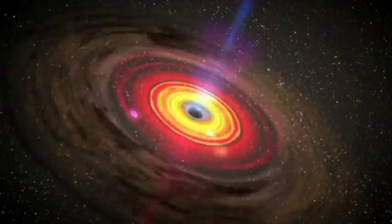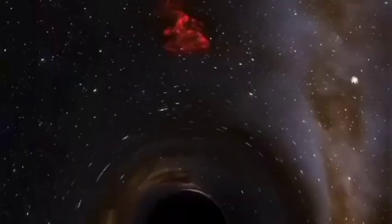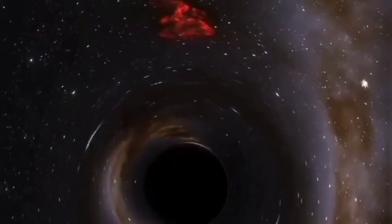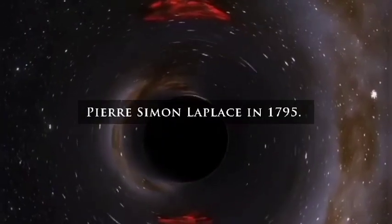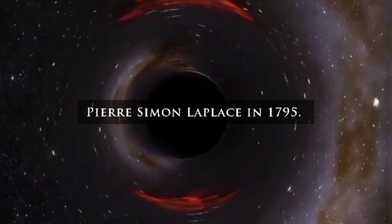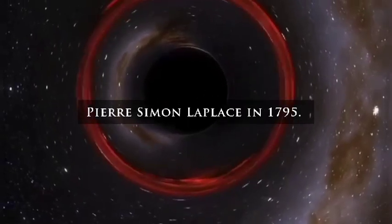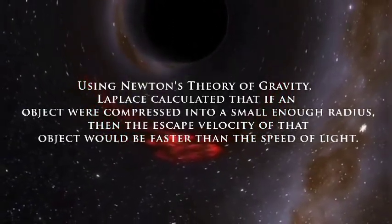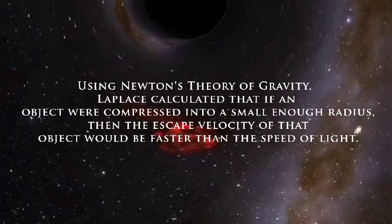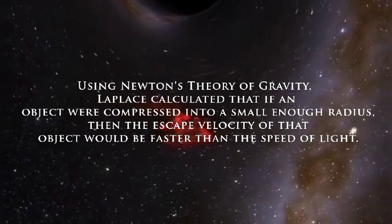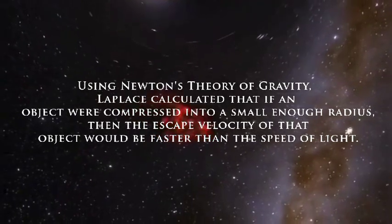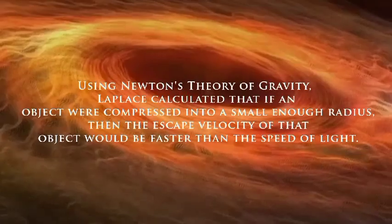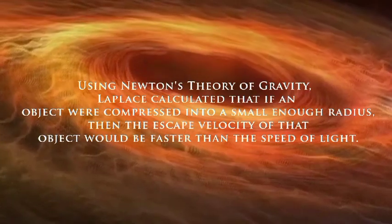The concept of an object from which light could not escape — a black hole — was originally proposed by Pierre-Simon Laplace in 1795. Using Newton's theory of gravity, Laplace calculated that if an object were compressed into a small enough radius, then the escape velocity of that object would be faster than the speed of light.